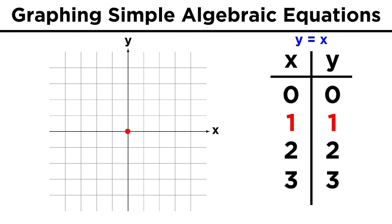For one and one, we need to get to an x value of one, which is one to the right, and a y value of one, which is up one. So let's put a dot here. We can do the same for two and two, three and three, and so forth.